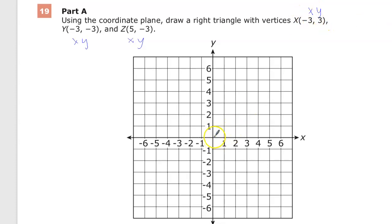So (-3, 3), I'll go in the X to -3, I'll go up to 3, and I'll make a point there. (-3, -3), so here and then down. And then 5 is my X, so I go up to 5, and then I go down, -3.